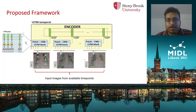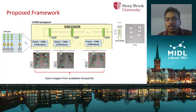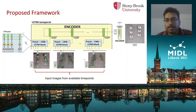LSTM spatial generates holistic feature vectors which are used as input into every time step of the second LSTM, called LSTM temporal. Finally, we obtain the context vector from the encoder, which along with the start token generates the decoder output. We then apply a softmax layer to classify the decoder output into severity scores for a future time point.